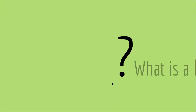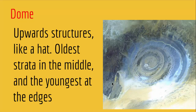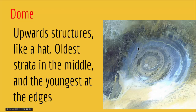Another type of folding is called a dome. A dome is an upward structure like a hat where the oldest strata is in the middle and the youngest is at the edges. Imagine stratas of rock bending upwards to create a hat-like shape where the oldest strata is in the middle and the youngest is at the edges. Just like you see in this picture, they created a hat-like structure where your oldest strata is in the middle and the youngest is at the top. These are called domes because they resemble a dome — and as you can see, all the layers have been eroded away and the vertical stratas have been exposed.